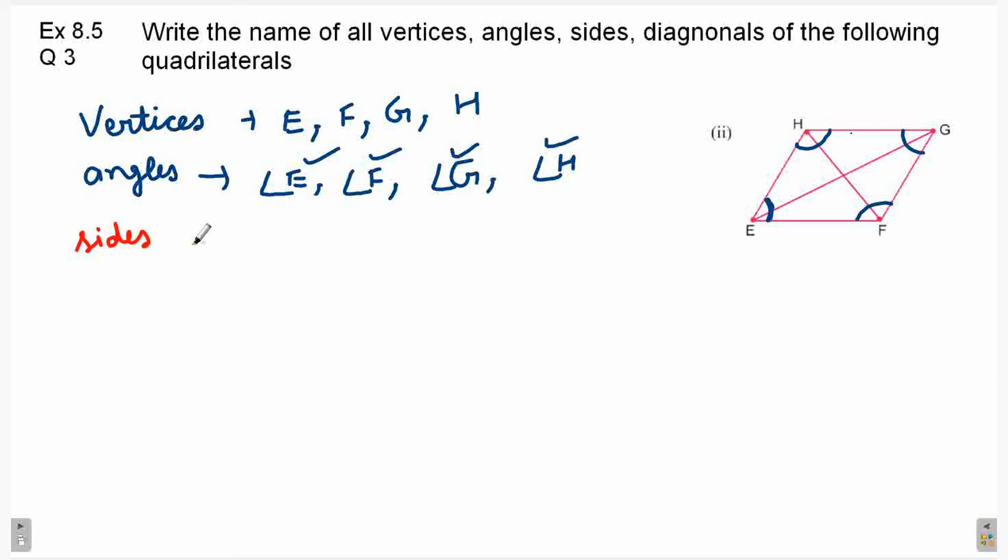Next, sides. So, sides kya hote hai? Jo line segments ko join karke hum quadrilateral banaate hai unko bolate sides. To yaha par kaun sides? Sides EF, then FG, then GH, then HE.